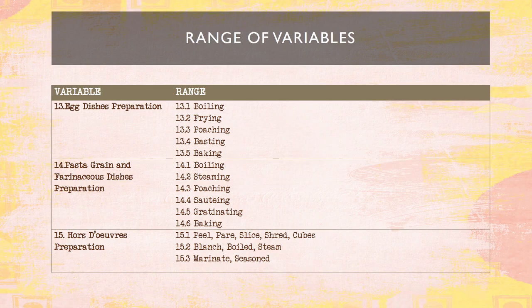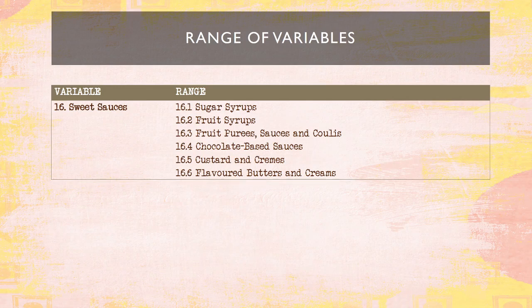Hors d'oeuvres are small appetizers or starter dishes served before the main meal — for example, chicken, slice of bacon, and others. Sweet sauces include sugar syrup, sweet syrup, fruit purees, sauces, cookies, chocolate-based sauces, custard creams, flavored butters, and sweet glazes.